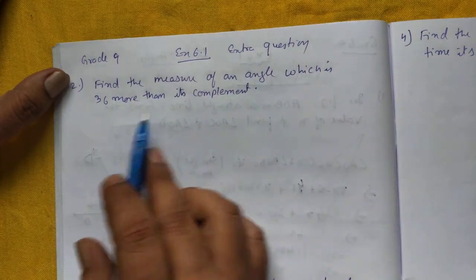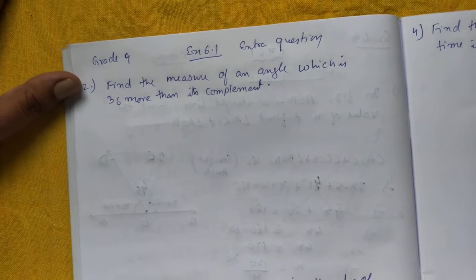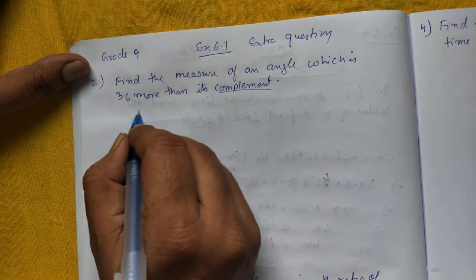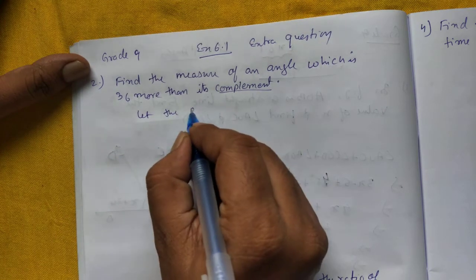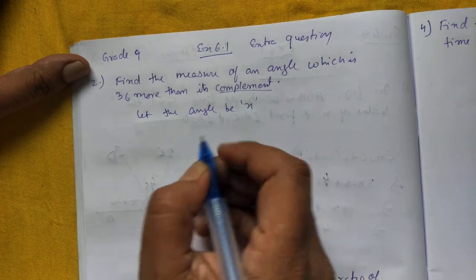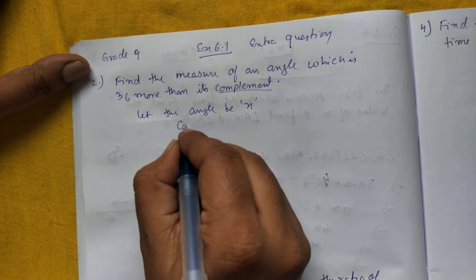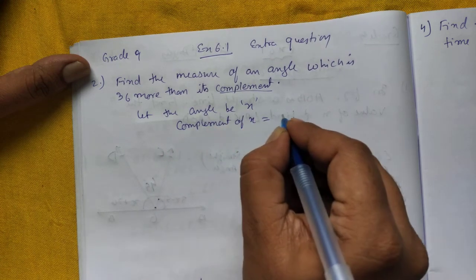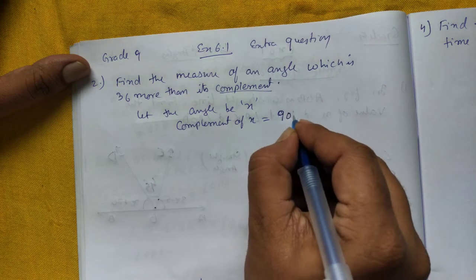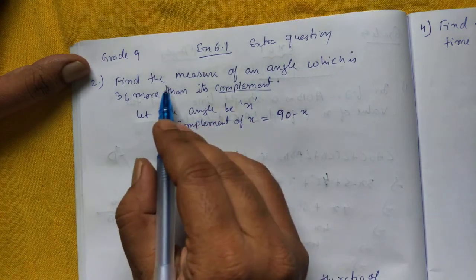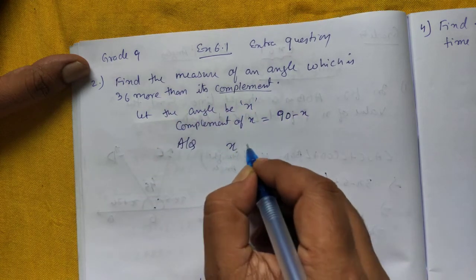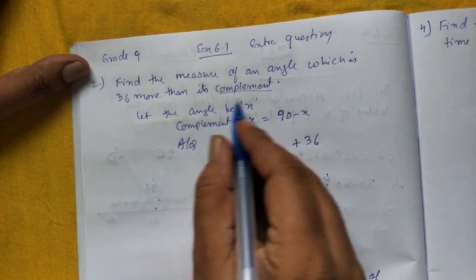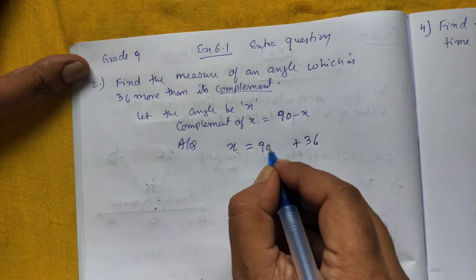Find the measure of an angle which is 36 more than its complement. So when they talk about complement, we don't know what is the angle, so let the angle be X. Complement of X will be 90 minus X always. Now as part of the question, what it says: find an angle which is 36 more, means plus 36 than its complement. Complement is 90 minus X, clear?